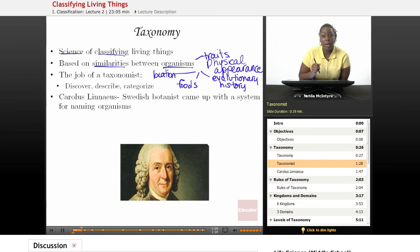The scientist that studies taxonomy and classifies organisms is called a taxonomist. The job of a taxonomist is to discover, describe, and categorize all living organisms.